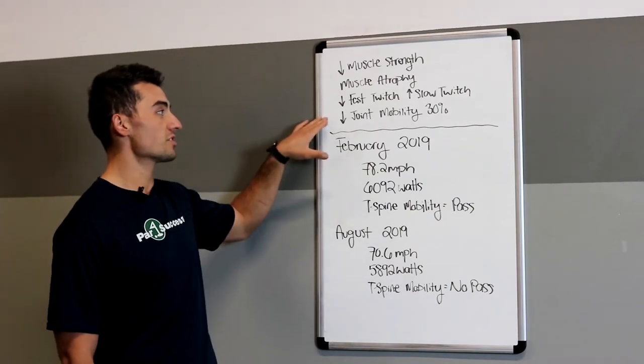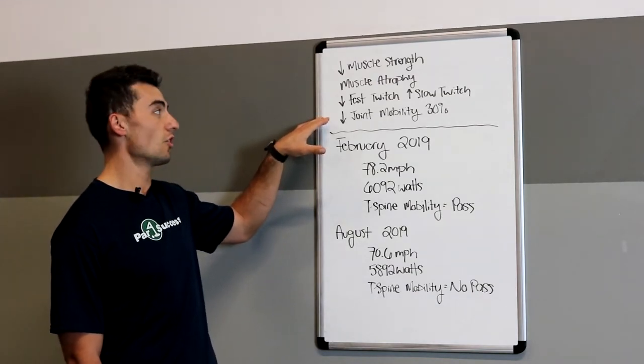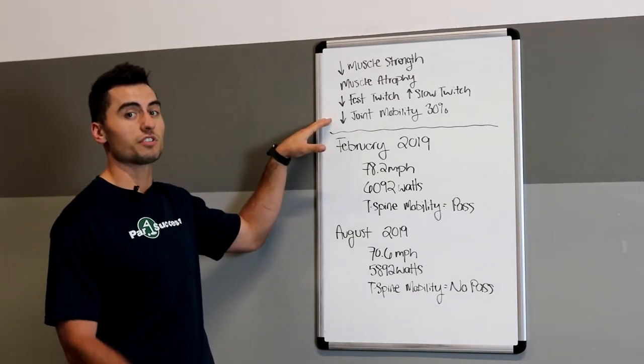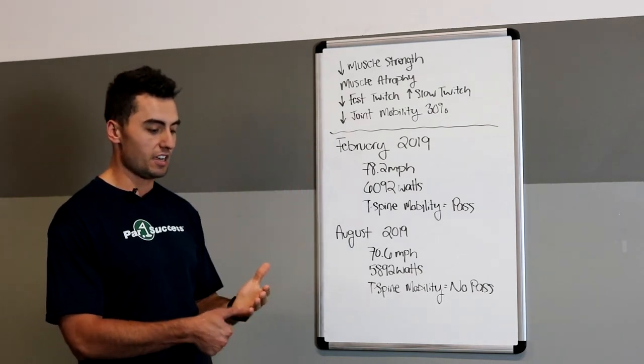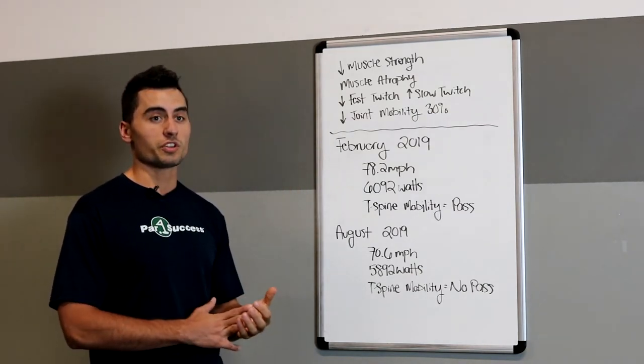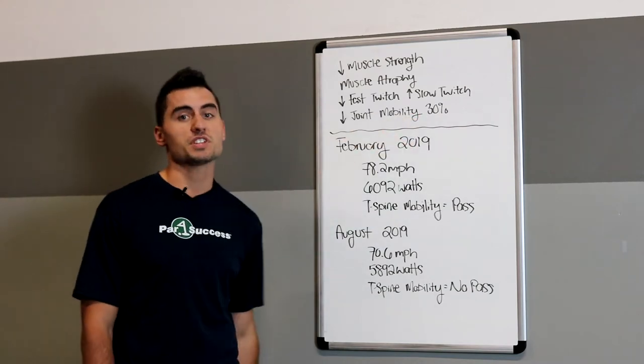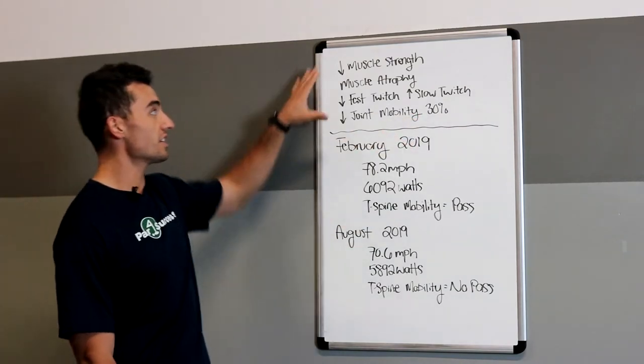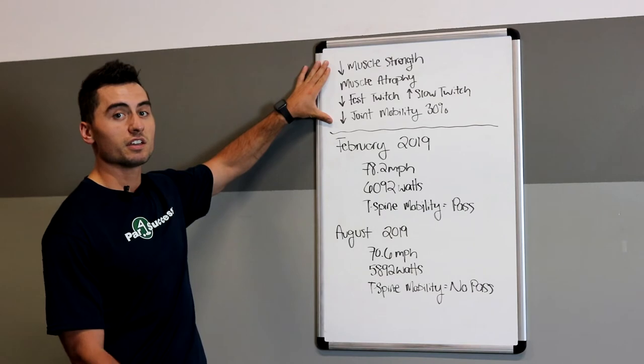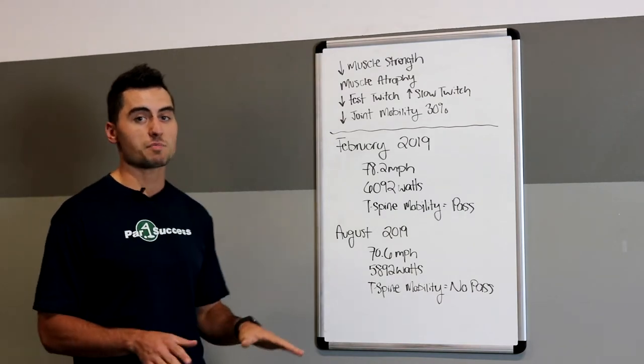And then the last thing that we also see here at Par for Success is overall joint mobility. So you talk about the four major rotary centers: your neck, your spine, your hips, as well as your shoulders. You see up to a 30% decrease in joint mobility. And this right here is happening in as little as four weeks from stepping away from the gym.